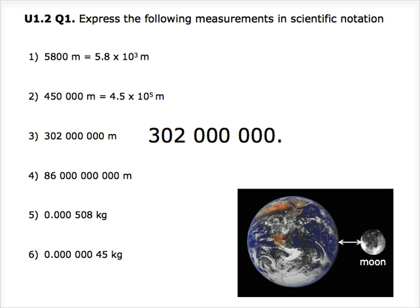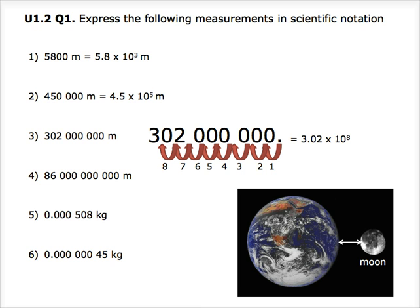Question 3: we have 302 million meters. We have to move the decimal point eight times to the left, giving us a coefficient of 3.02. Thus, our final answer is 3.02 times 10 to the power of 8.